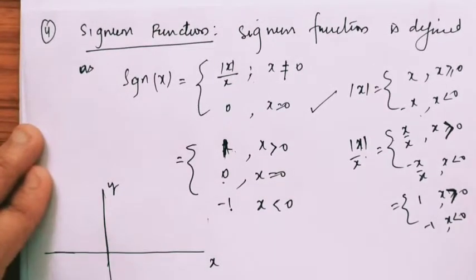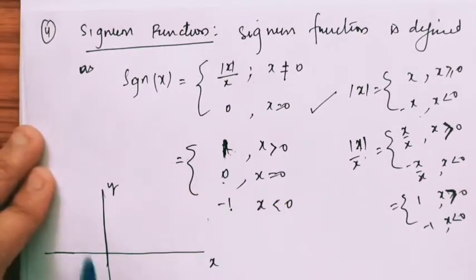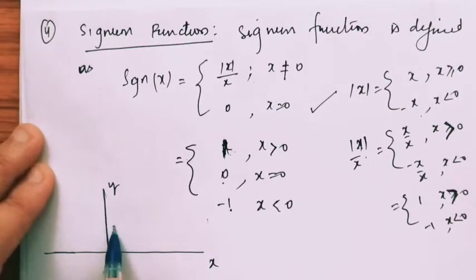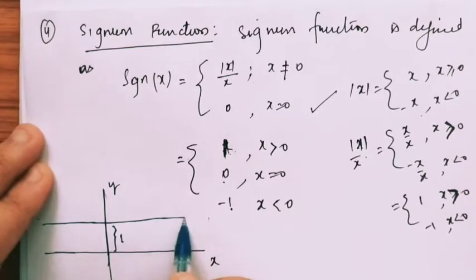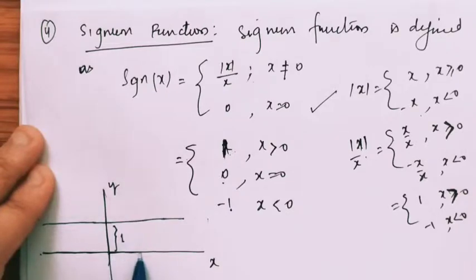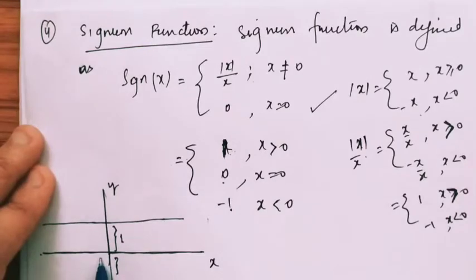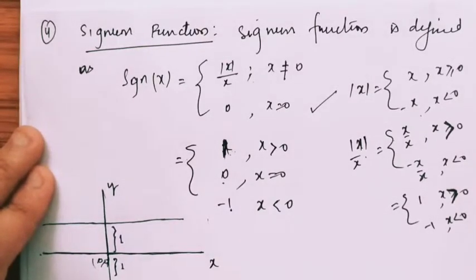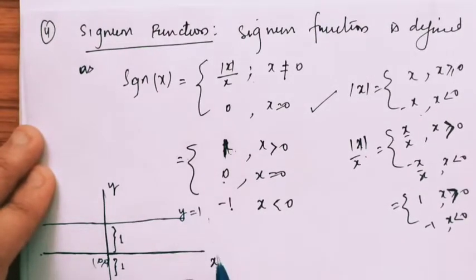This is X and this is Y. Now look at the constant function 1 — Y equal to 1 is a line, 1 unit from the origin. So this will give you this line. Y equal to 1 and Y equal to 0 — it is the X-axis. And Y equal to minus 1 — that is 1 unit downward from the origin — this is the line of Y equal to minus 1. This is Y equal to 1, and certainly the X-axis is Y equal to 0.